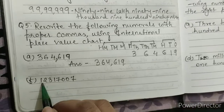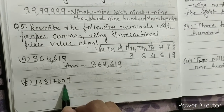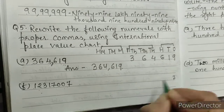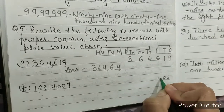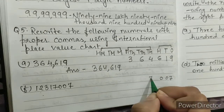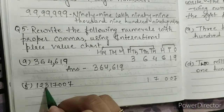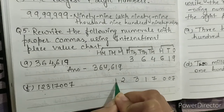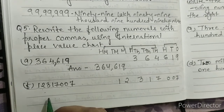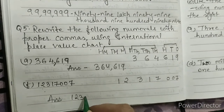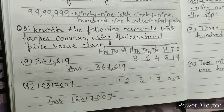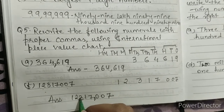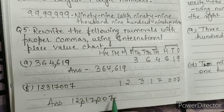Part f) 12317007. We arrange it according to the international place value chart: 7 is at ones place, 0 at tens, 0 at hundreds — then comma — 7 at thousands, 1 at ten thousands, 3 at hundred thousands — then comma — 2 at millions, 1 at ten millions. We write it as 12,317,007. This is our answer.